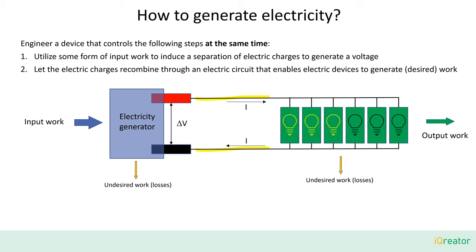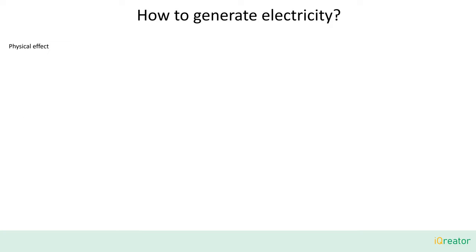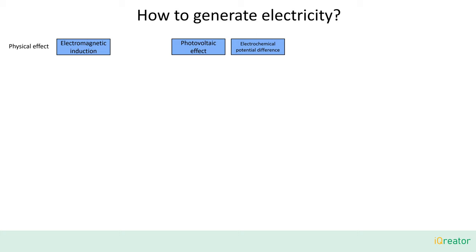Which principle methods exist to achieve step one? There are actually not so many different effects that can be used to induce a separation of electric charges. The main categories are electromagnetic induction, the photovoltaic effect, electrochemical potential differences, the thermoelectric effect, and the piezoelectric effect.